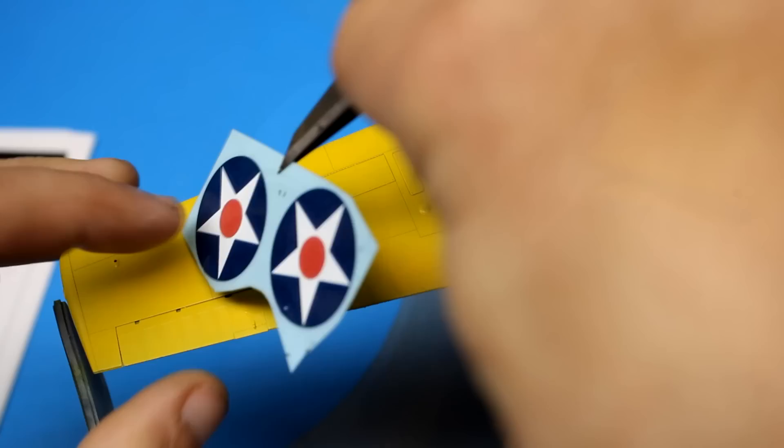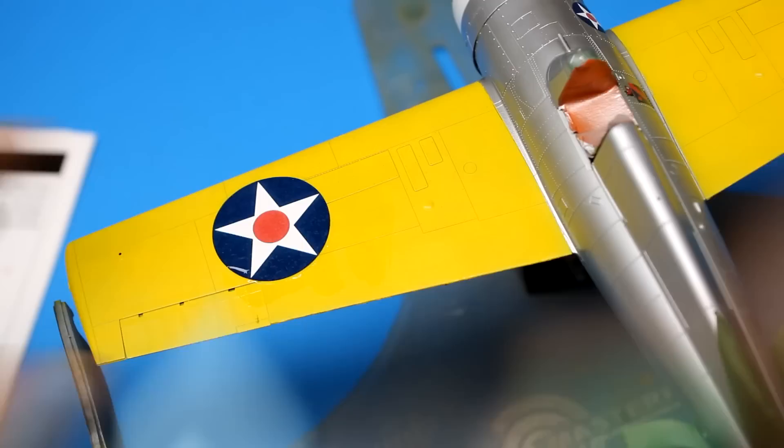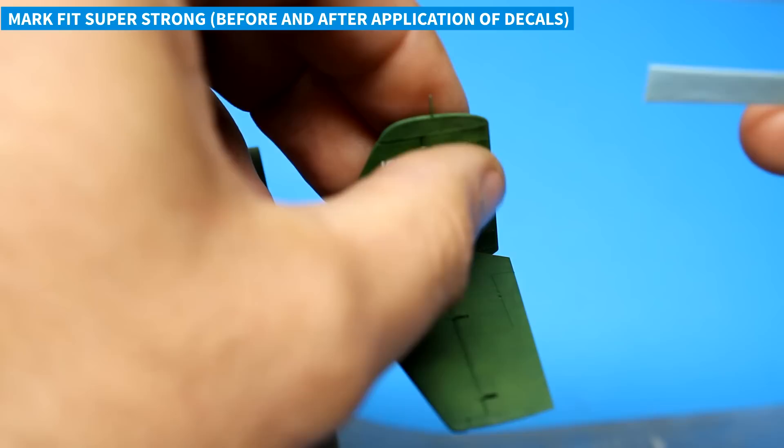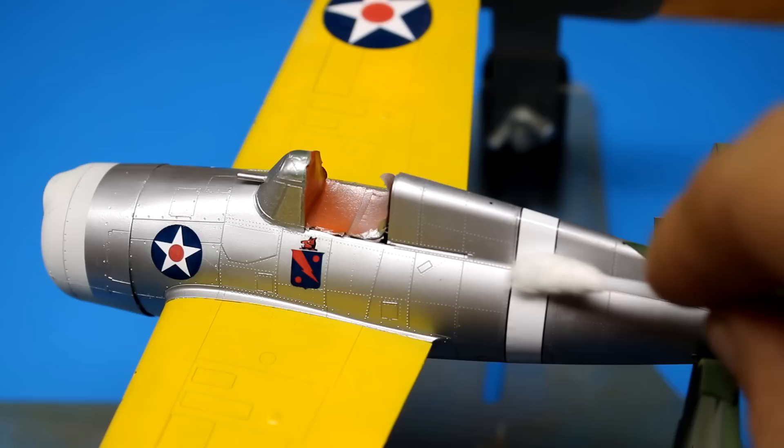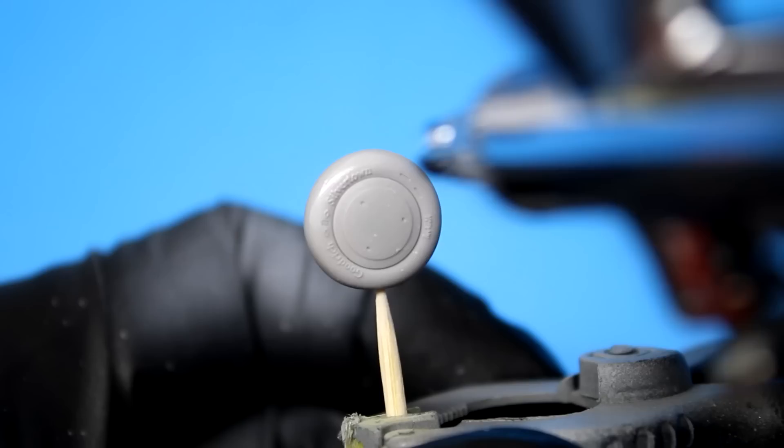One area I thought I would have trouble with this kit would be putting on the long ID markings on the wings and fuselage but by putting down some mark fit super strong before placing the decal I was able to move it around and put it in place. Once I was happy with the positioning I used a q-tip to remove the excess fluid from underneath and then applied some mark fit super strong on top and then allowed it to dry for a full 24 hours.